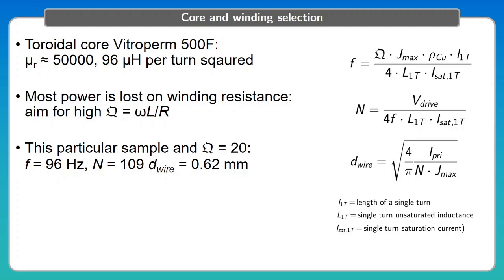Most power losses that happen in this sensor are within the resistance of the excitation winding. So we derived and applied these design equations to find out the correct number and thickness of the winding.